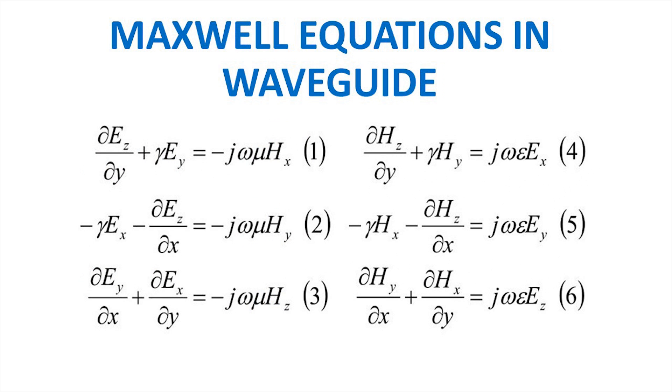On solving the cross product and equating the components, we will obtain the following six equations. Each equation represents one component of electric or magnetic field in terms of two components of magnetic or electric field respectively. In these equations, del by del z is denoted by minus gamma and direction of propagation is taken as z direction.